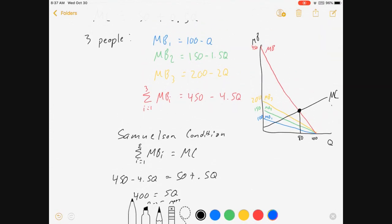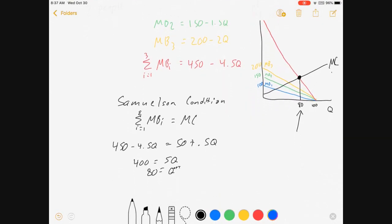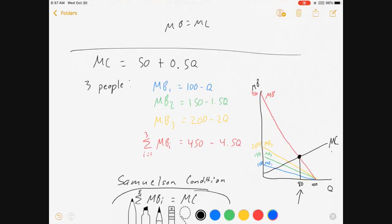the quantity is 80. That's the quantity that creates the most well-being for society in this public goods market. So how did we do it? We basically just set the marginal benefits to society equal the marginal costs. And we had to do that by adding up the different marginal benefits.